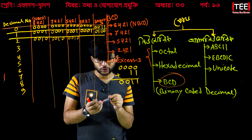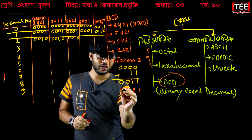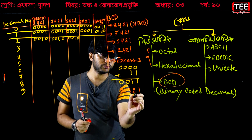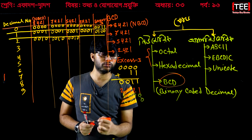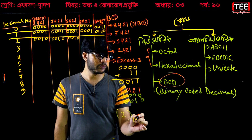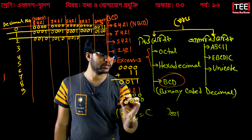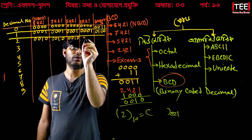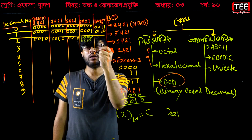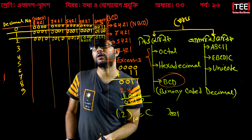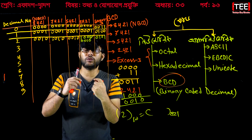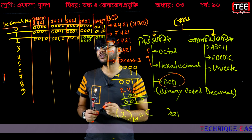This is code 1, 2, 4, 2. So in XS3, 5 is represented as 0, 1, 0, 1. The representation continues in this way: adding 3 to each decimal digit and converting to binary. So XS3 code for 5 is 0101.